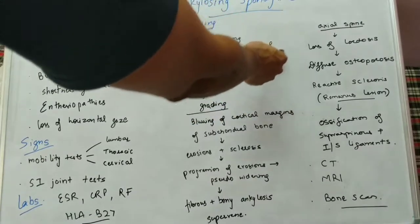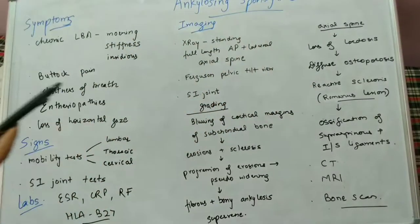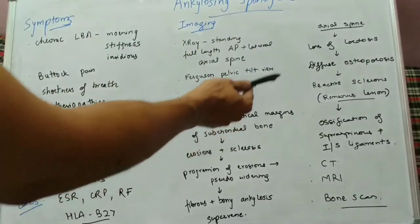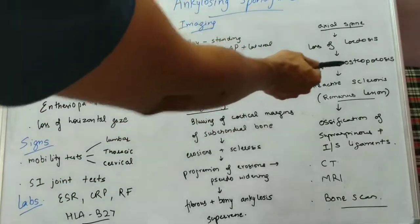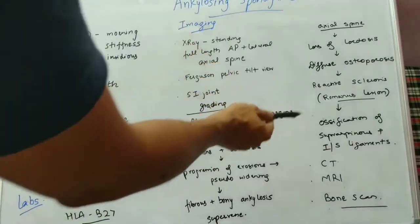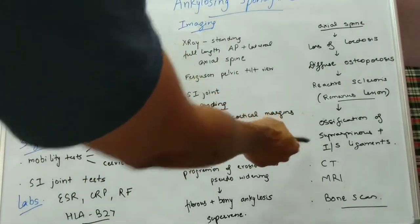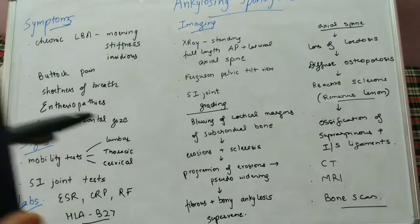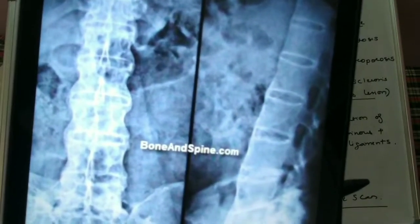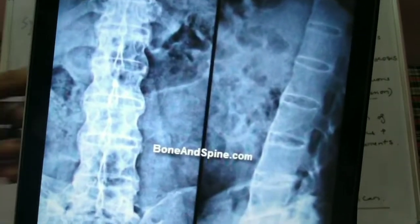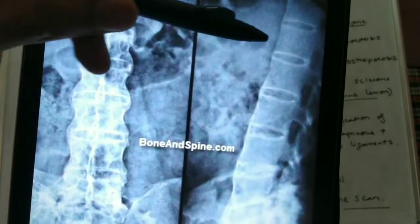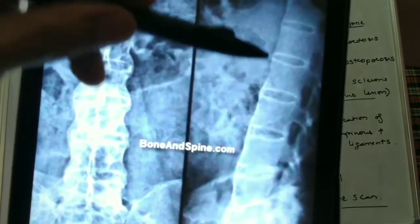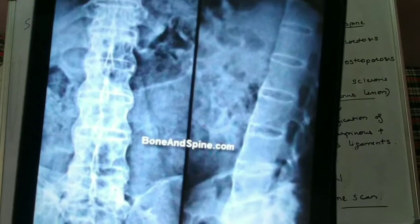This is the sequence of events that occur in the axial spine in ankylosing spondylitis. First there will be a loss of lordosis, followed by diffuse osteoporosis, then reactive sclerosis, followed by ossification of the various ligaments. There is ossification of the outer fibers of the annulus fibrosus and syndesmophyte formation.